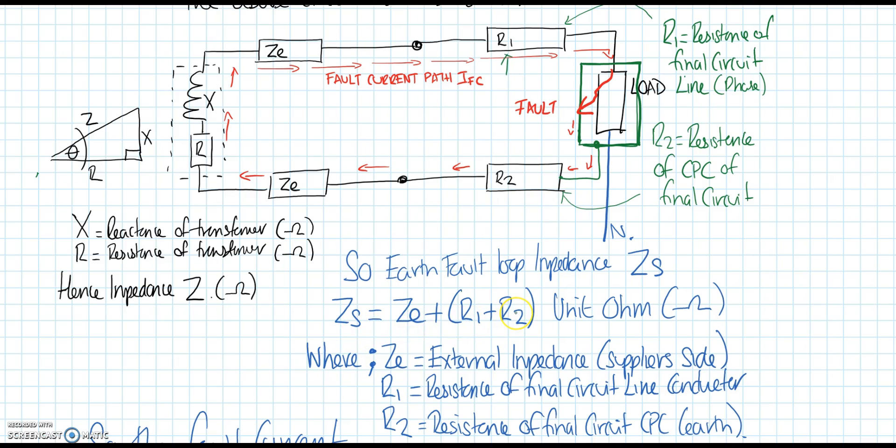This is the actual fault path current where the current would flow. What I haven't drawn in here is a fuse. If I put a fuse in there, the idea is we want the current to be of a magnitude great enough to cause this fuse to rupture. The bigger the current that flows during the fault, the quicker the disconnection time of that protective device. There are other problems as well which come with it.